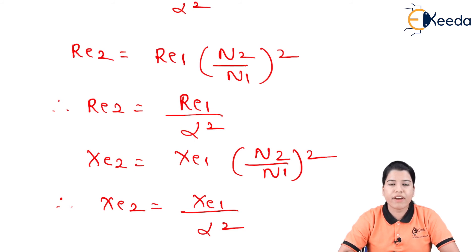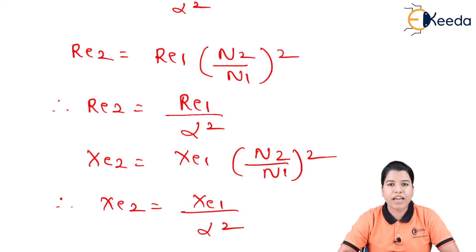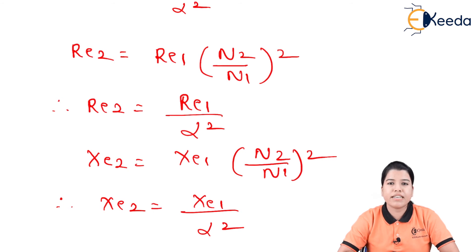By using the short circuit test we can find the copper loss and circuit parameters such as equivalent resistance, equivalent impedance, and equivalent reactance. In this way we have studied how to find the equivalent circuit parameters as well as the losses of the transformer using the open circuit and short circuit tests. These tests are very useful as very little input is needed to determine the performance of the transformer.